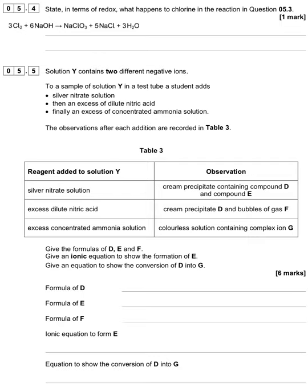Looking at the equation from the previous question: chlorine starts at oxidation state 0 (elemental) and becomes both +5 and −1. It is simultaneously being oxidised and reduced in the same reaction. This is called disproportionation. You can simply state that chlorine undergoes disproportionation, or state that it is both oxidised and reduced in the same reaction.